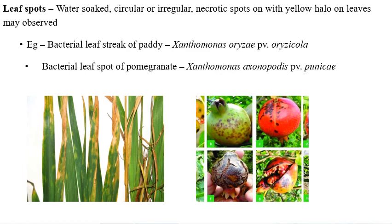Leaf spots are water-soaked, circular or irregular necrotic lesions with a yellow color halo that can be observed. On rice, you can see circular, irregular lesions with yellow color discoloration and water-soaked irregular necrotic spots. Examples include bacterial leaf streak of paddy caused by Xanthomonas oryzae pv. oryzicola, and bacterial leaf spot of pomegranate caused by Xanthomonas axonopodis pv. punicae.